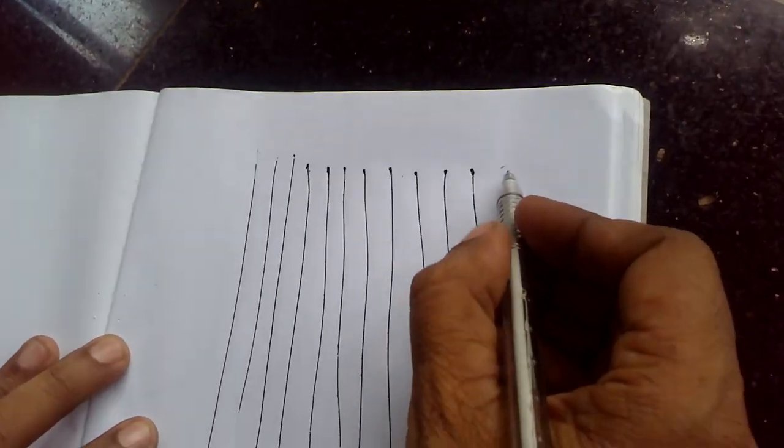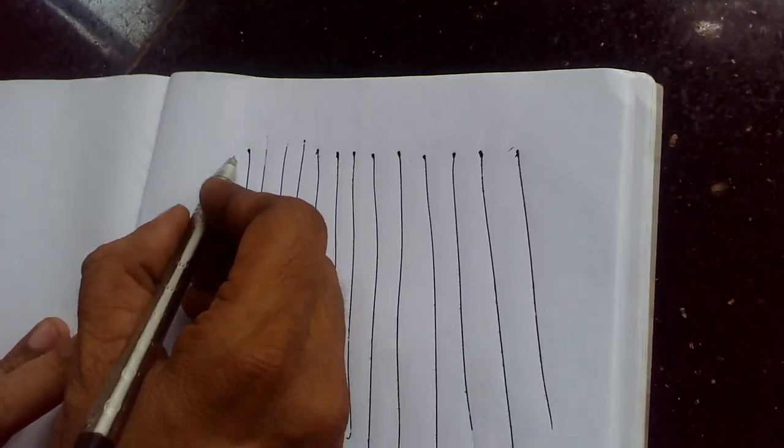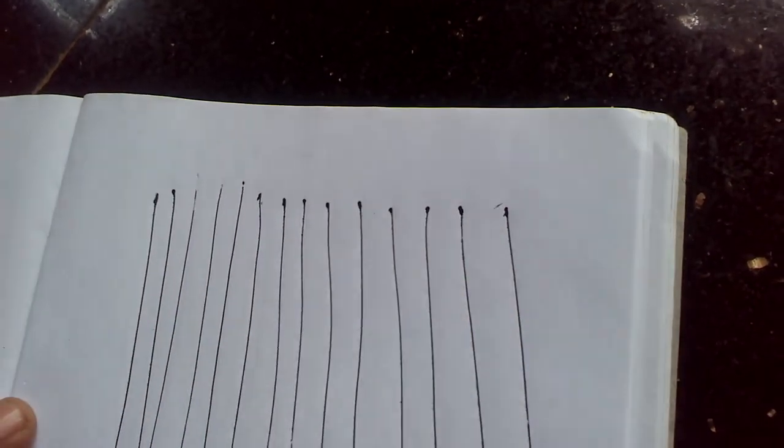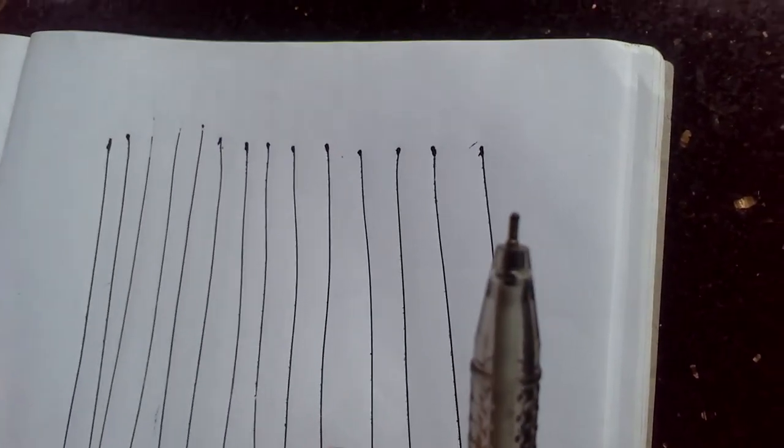See at the starting point of each line there are big and sharp dots. These dots occur because of the ink accumulated at the tip of the pen.